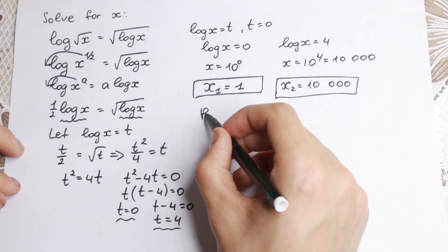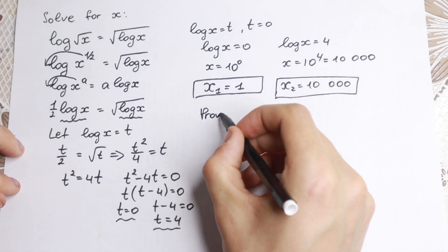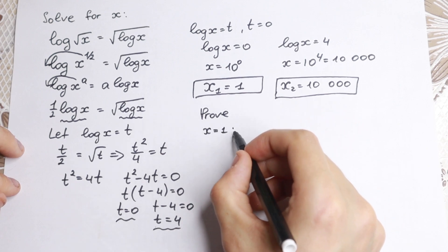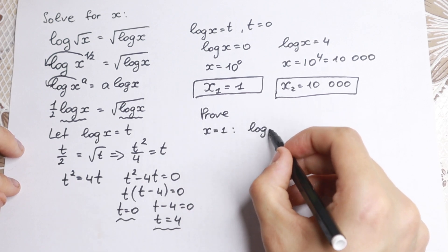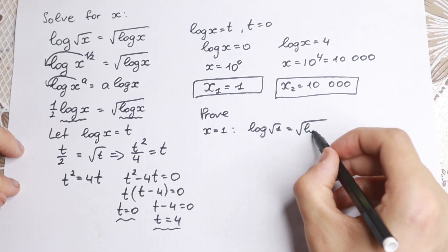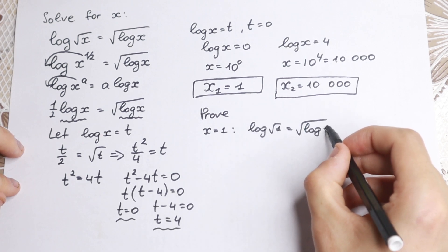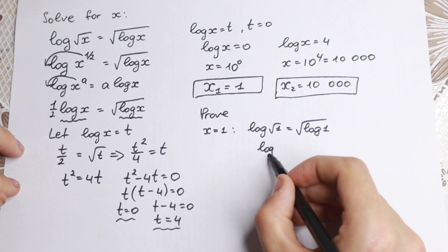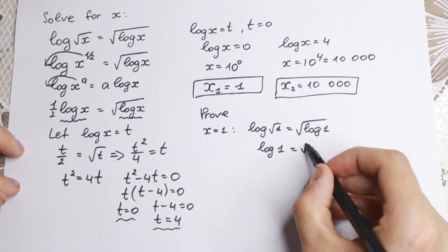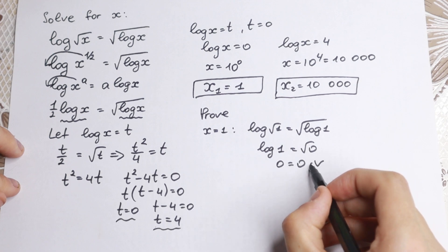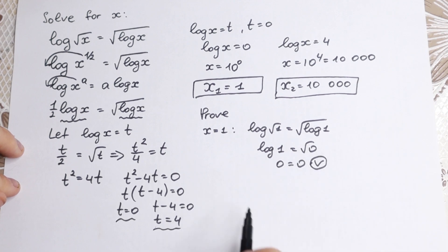Let's check x equals 1. We have logarithm squared of 1 equal to square root of logarithm 1. On the left we have logarithm 1 squared equal to square root of 0. So 0 equals 0, which is absolutely correct.